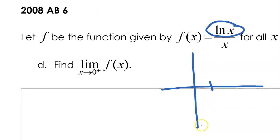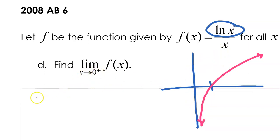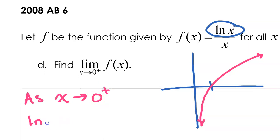It has a vertical asymptote, which is the y-axis, and it passes through an x value of 1. This is what natural log x looks like. With this in mind, you know that as x approaches 0 from the right, natural log x approaches negative infinity.